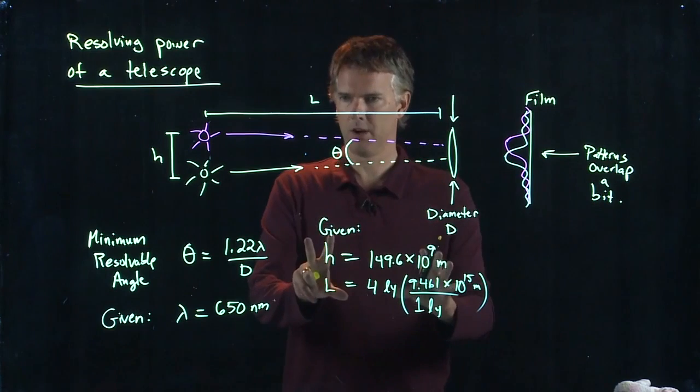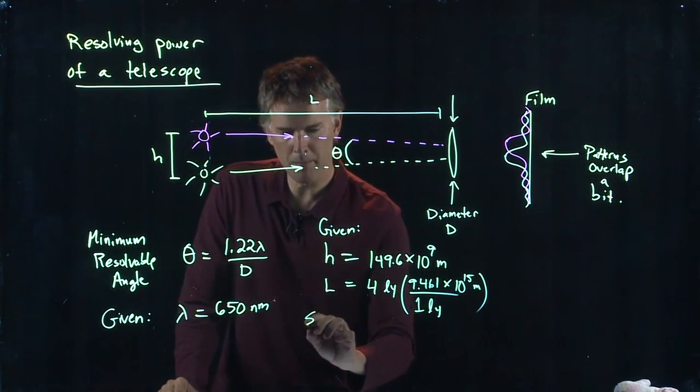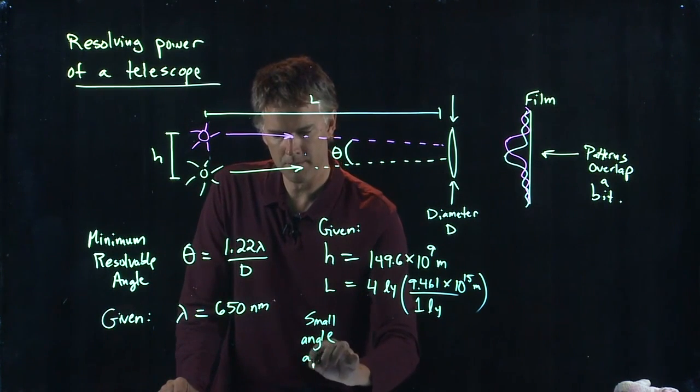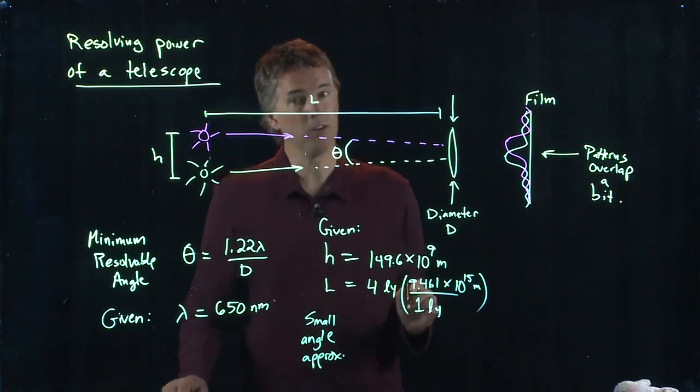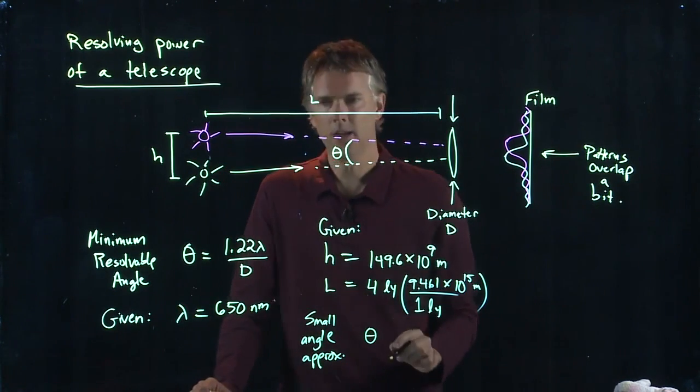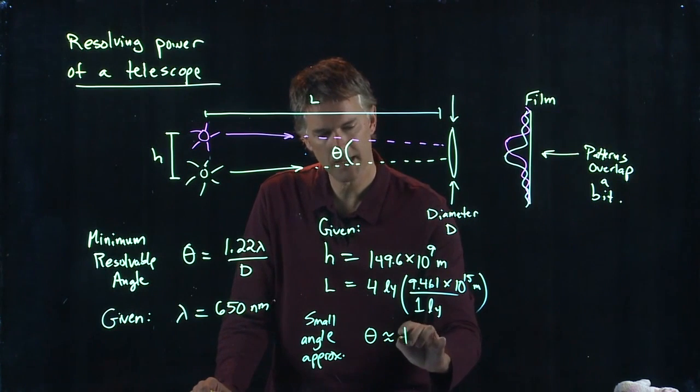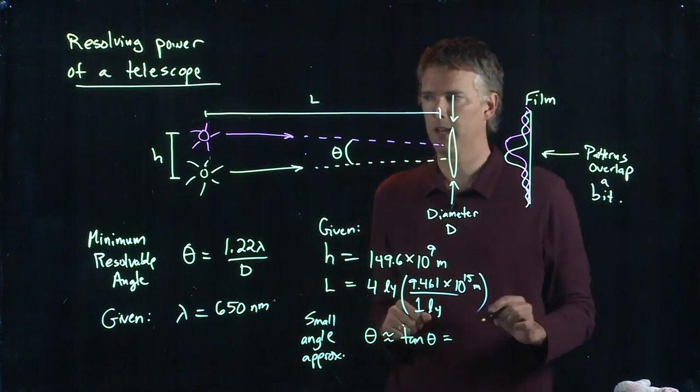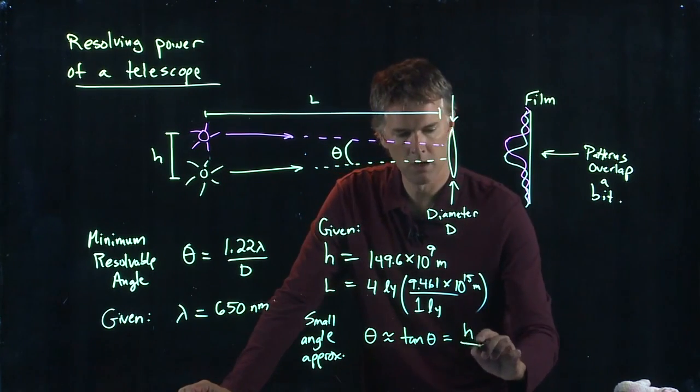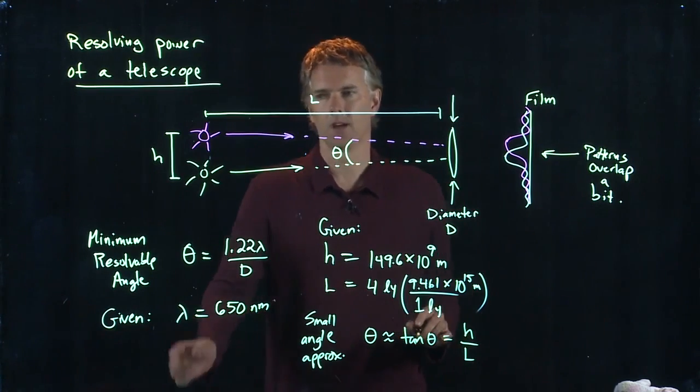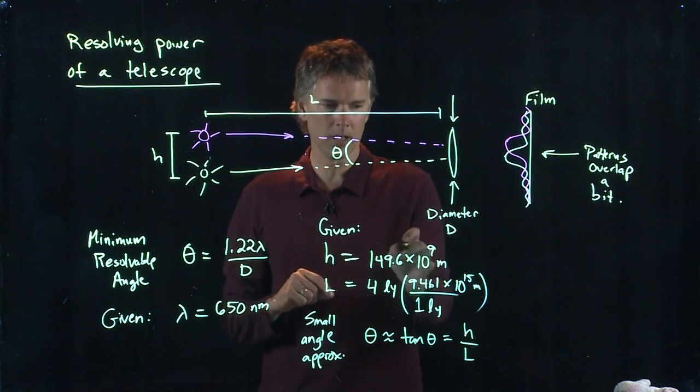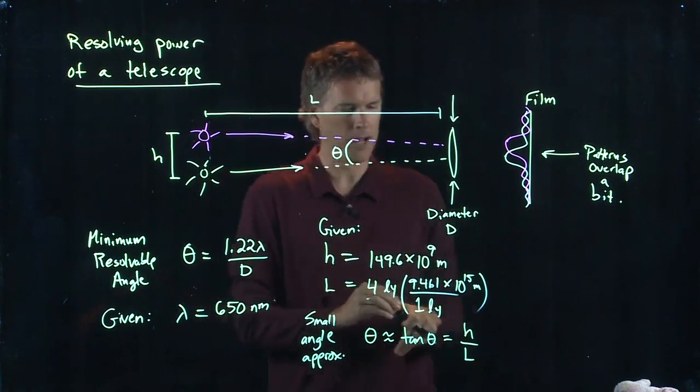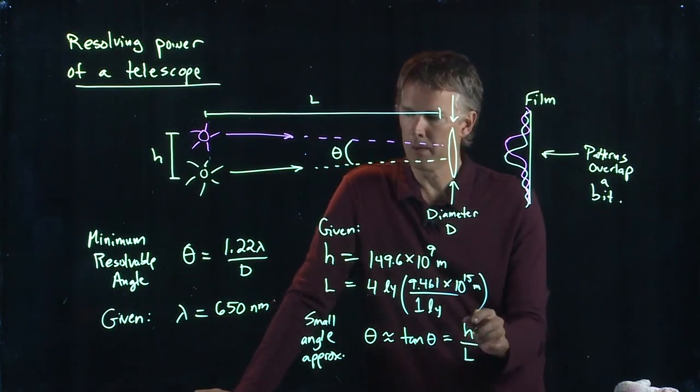So it looks like we have enough here to calculate theta if we remember the small angle approximation. And the small angle approximation says the following: theta is essentially the same as tangent of theta. And tangent of theta here is just H over L. This number H is clearly much smaller than this distance L, and so we are satisfying the small angle approximation. And now we can put everything together.